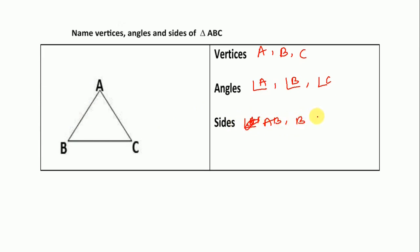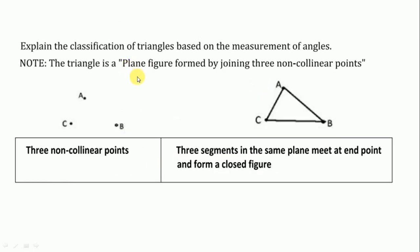Here the definition of triangle is given: plane figure formed by joining three non-collinear points is called triangle. For identification we see three non-collinear points, three line segments in the same plane meet at the end point and form a closed figure.